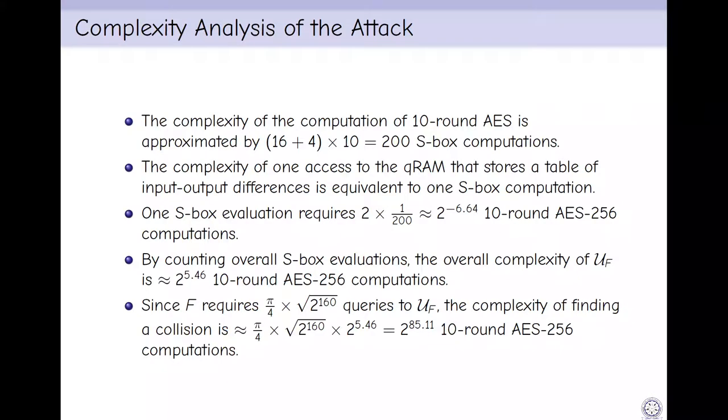For the complexity analysis of the attack: first, the complexity of the computation of 10-round AES is approximated by 200 S-box computations. Secondly, the complexity of 1 query to the QRAM that stores a table of input-output differential is equivalent to 1 S-box computation. Overall, by counting the S-box evaluations, the complexity of UF is 252 S-box computations. Since Grover's algorithm requires π/4·2^80 UF calls, the complexity of finding the collision is approximately 2^85.11 10-round AES-256 computations.